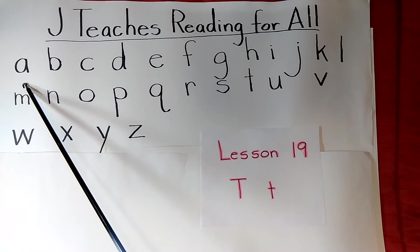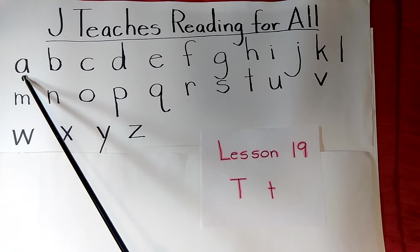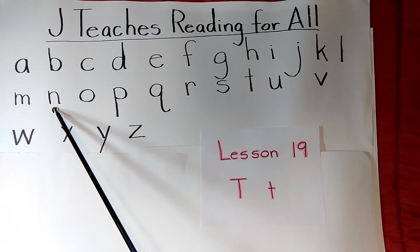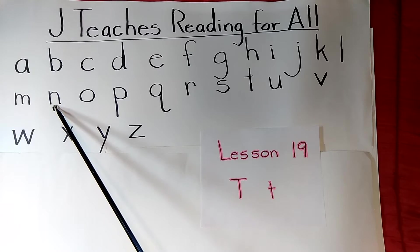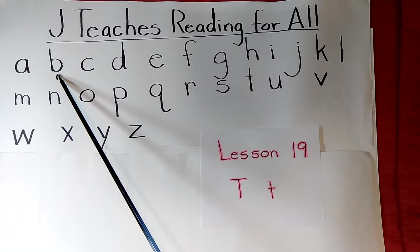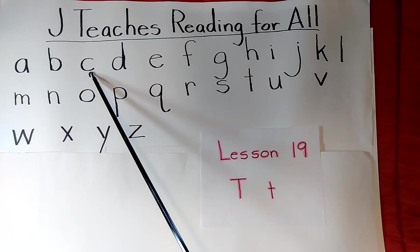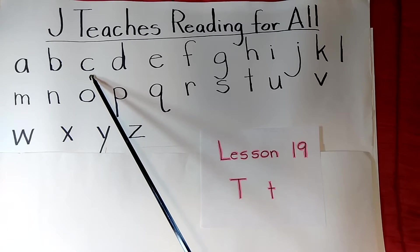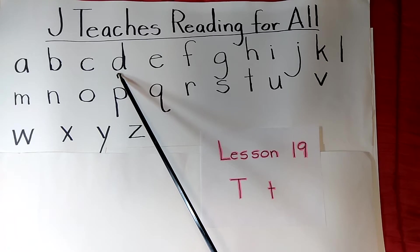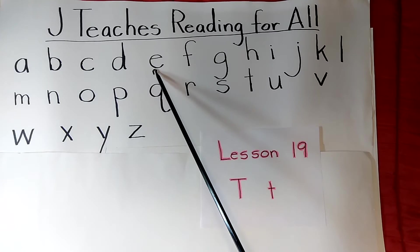Let's review the sounds of the letters. Short A — A, apple. N — N, nut. B — B, bat. C — C, cap. D — D, donut.